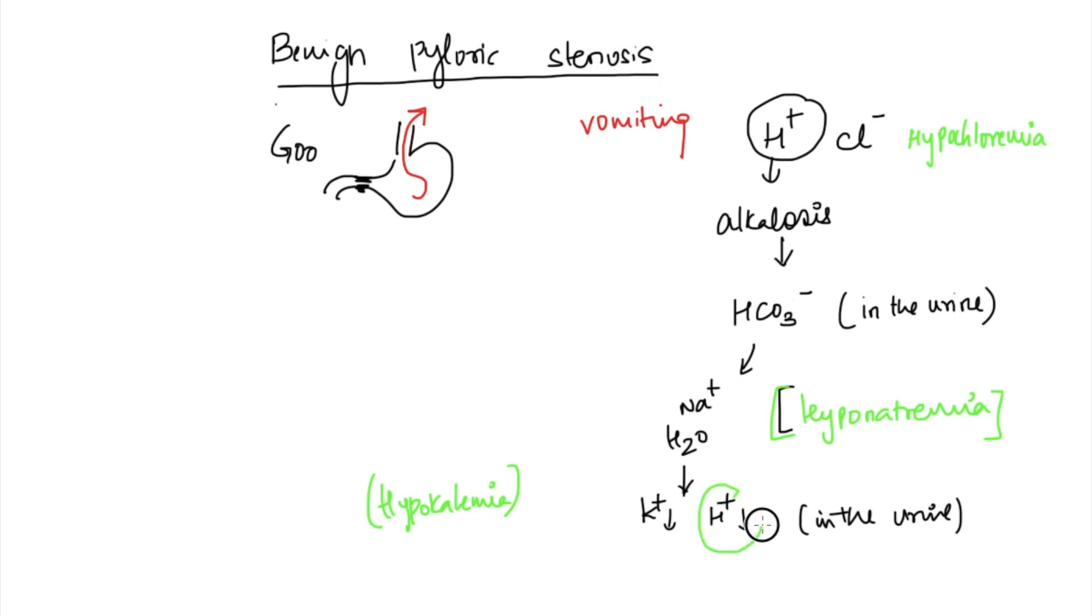Now you got to notice one important thing here. The body is alkaline, but we're throwing out acid. Point is, we should retain acid, isn't it? But we're throwing out acid in the urine. That is called paradoxical aciduria because this is not normal - losing H+ when there's actually alkalosis in the body.